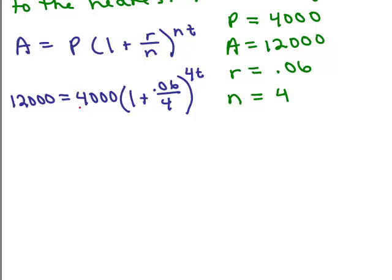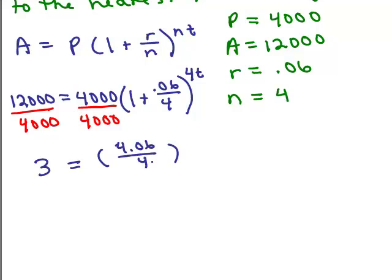The first thing I'm going to do here is divide both sides by 4,000. So on the left-hand side, I'm just going to get 3 equals, and this is going to cancel, so I just have what's in parenthesis. Now I have to simplify what's in parenthesis if I can. I think of this as 4 over 4 plus 0.06 over 4, so that's going to be 4.06 over 4 to the 4t, and then you might want to just do that in your calculator, and that gives you 1.015 to the 4t.